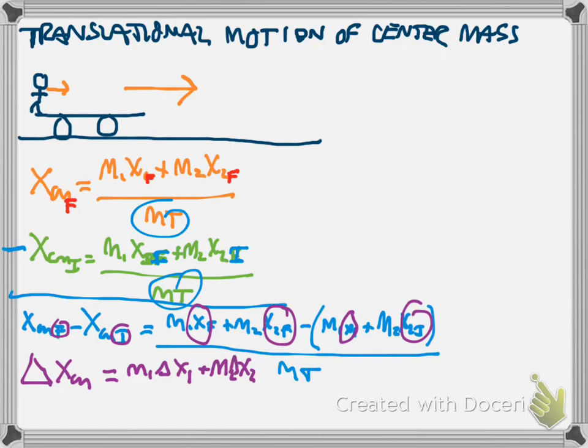all over the mass total. And then one last piece is I'm going to divide everything by the time. So divided by delta t, divided by delta t, divided by delta t.